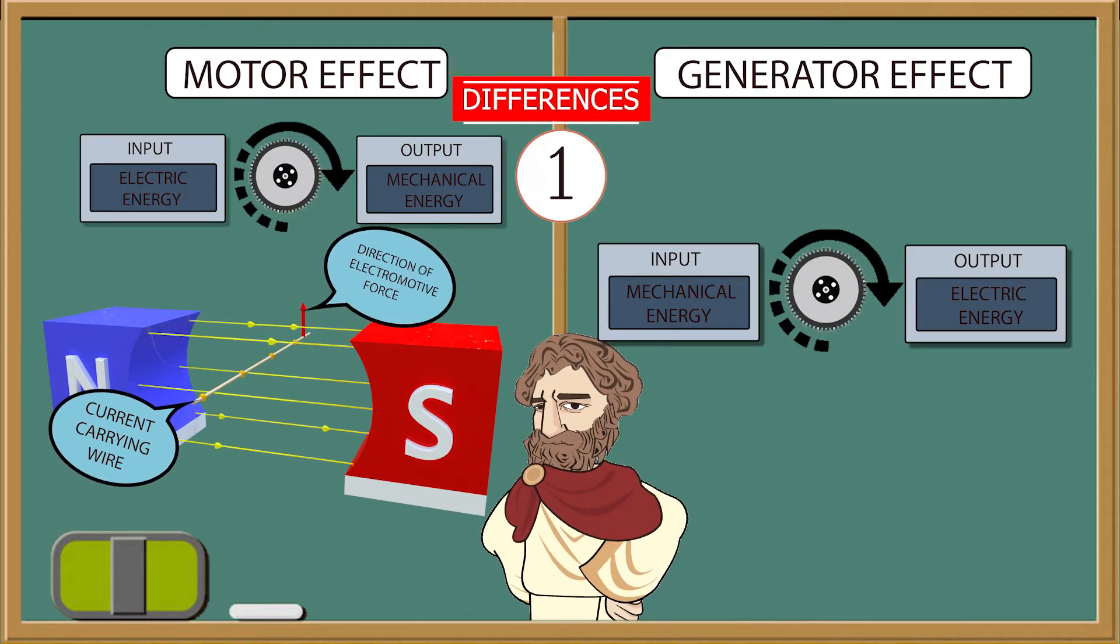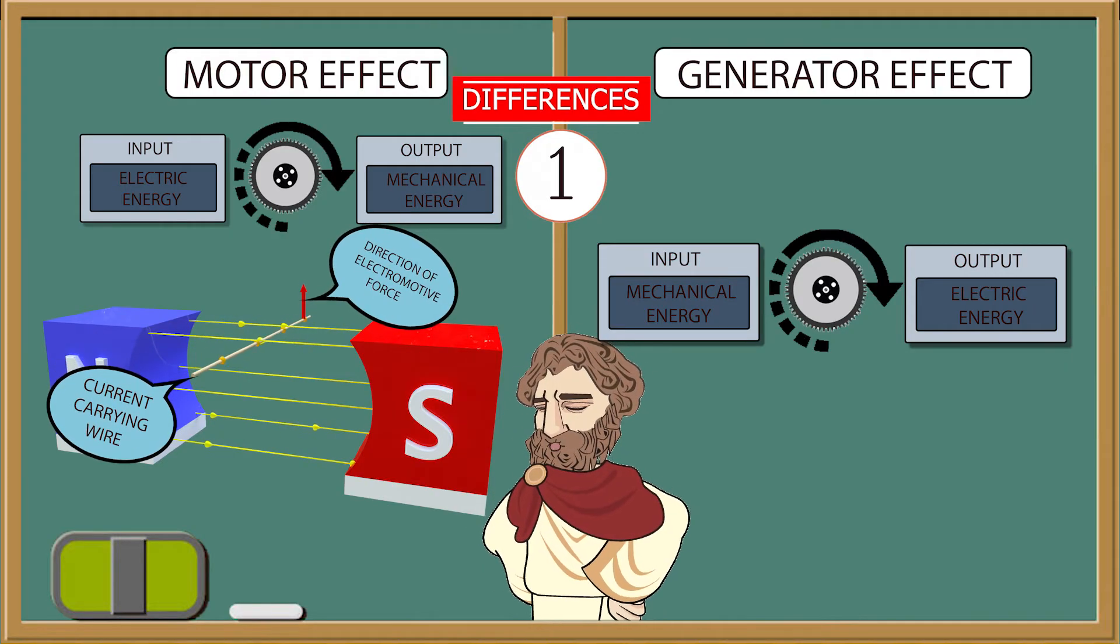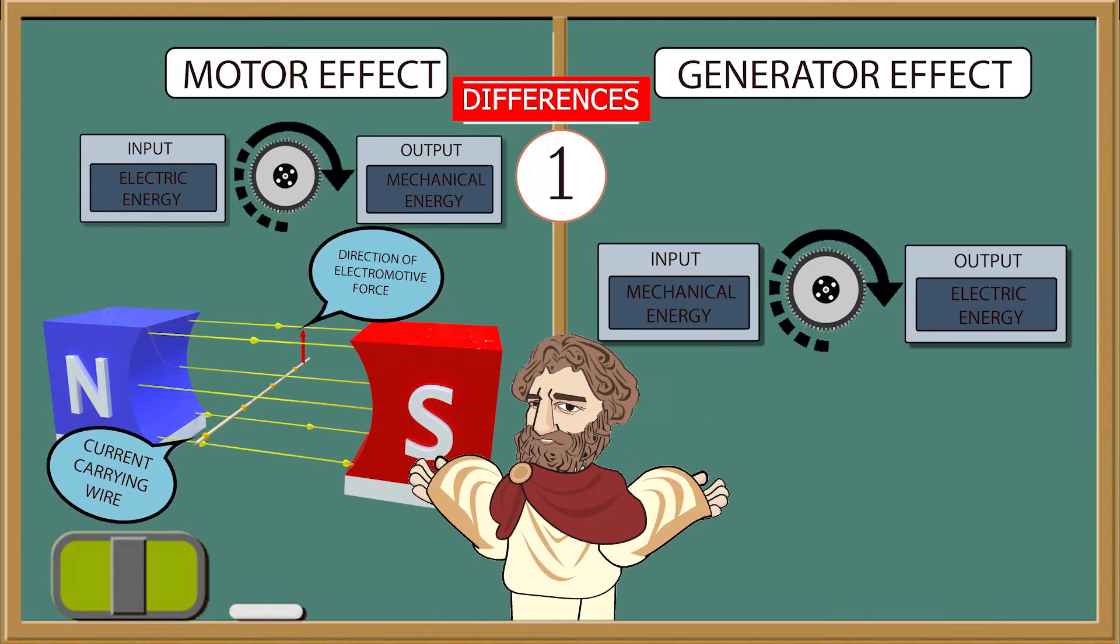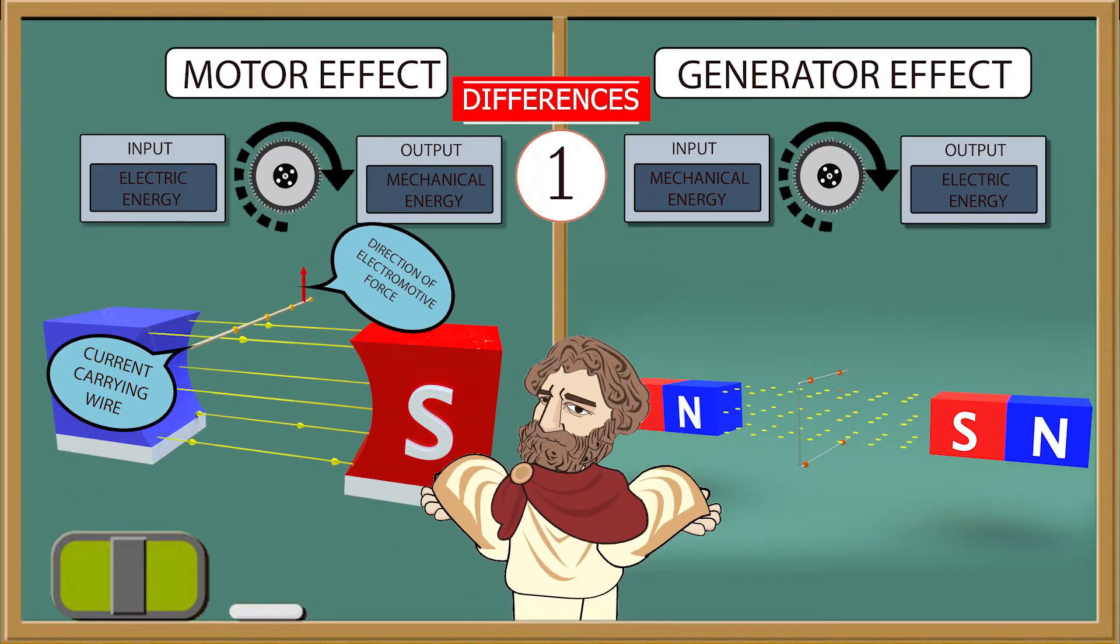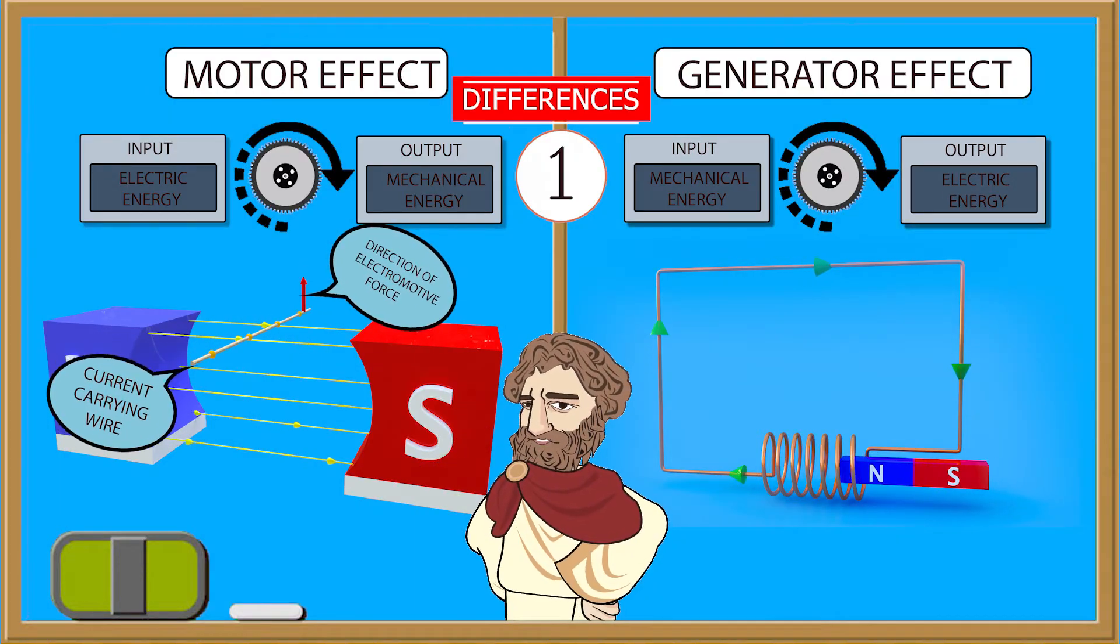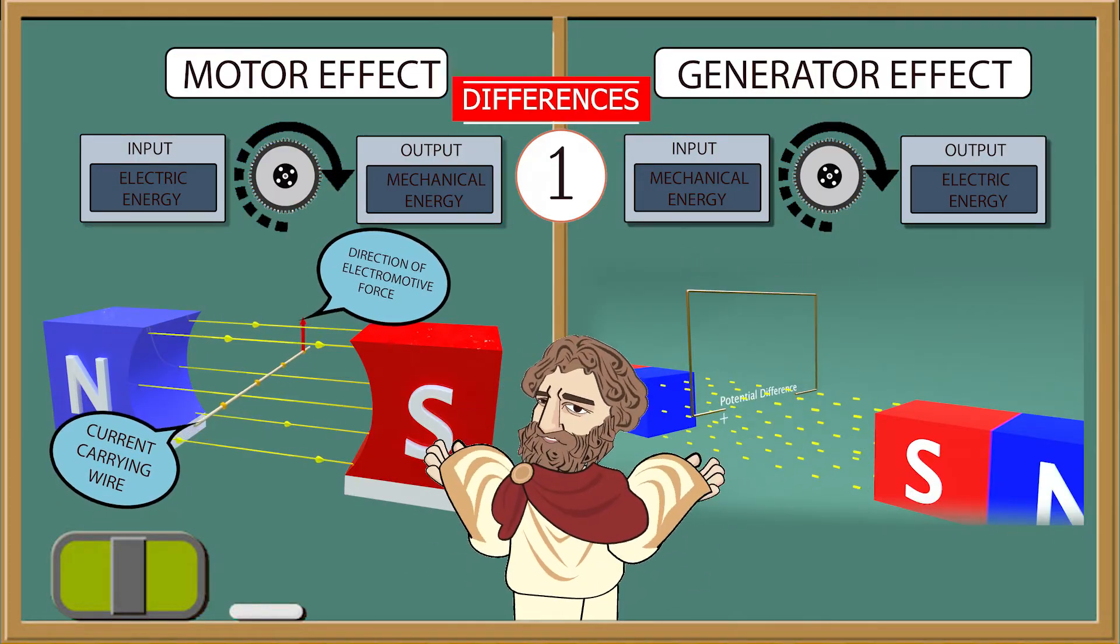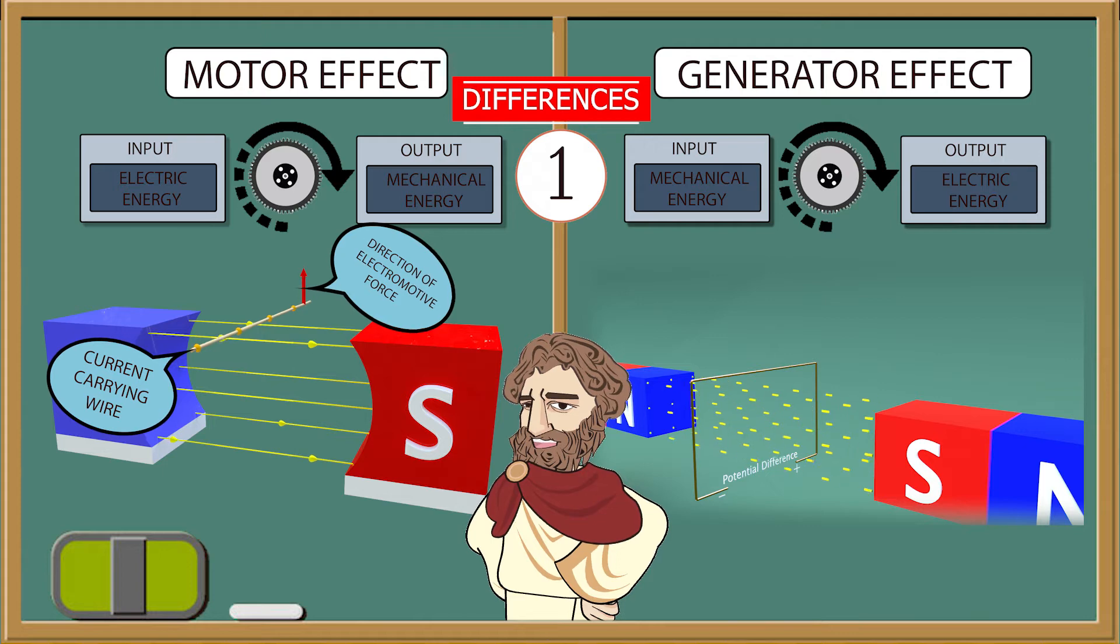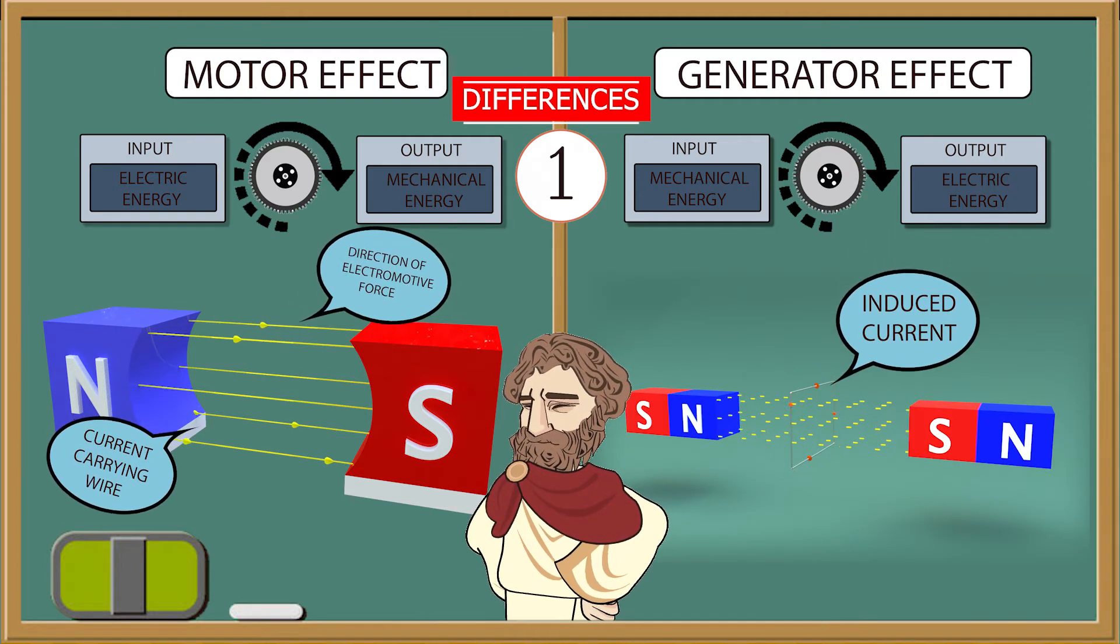In case of generator, mechanical energy is the input and electric energy is the output. Let's clarify, if we move the wire through the magnetic field or if we move magnets into the coil of wire like shown, then a potential difference is induced across the ends of the wire or if we have a complete circuit, then in this circuit we induce current.